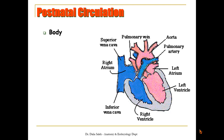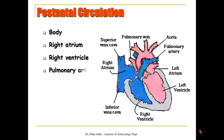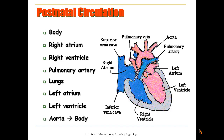In adult circulation, venous blood returns from the body via the superior and inferior vena cava to the right atrium, then passes through the tricuspid valve to the right ventricle, and is pushed through the pulmonary trunk to the pulmonary arteries to both lungs to be oxygenated. It then returns through the pulmonary veins to the left atrium, through the mitral valve to the left ventricle, and out through the aorta to the rest of the body.